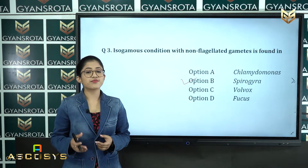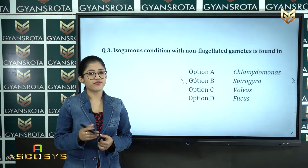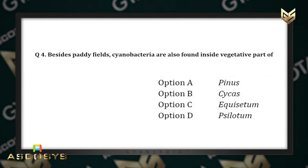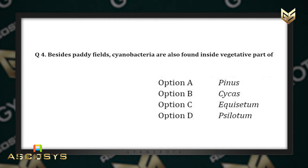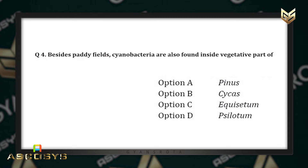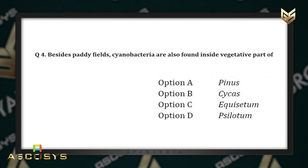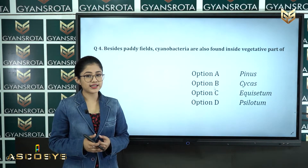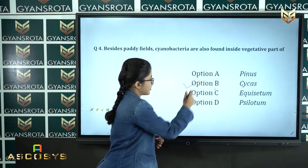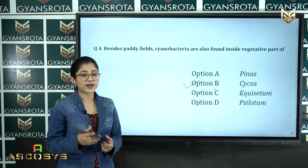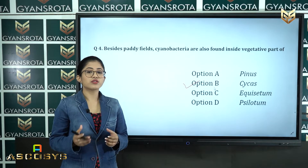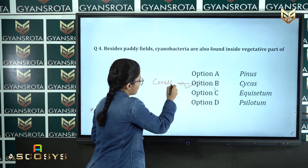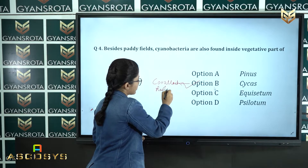Question number four: besides pteridophytes, cyanobacteria are also found inside vegetative parts of — option A: Pinus, option B: Cycas, option C: Equisetum, option D: Selaginella. This is from the chapter Plant Kingdom. The correct answer is option B, Cycas. Cyanobacteria (blue-green algae) are also found inside the vegetative parts of Cycas, which has coralloid roots that can fix atmospheric nitrogen.